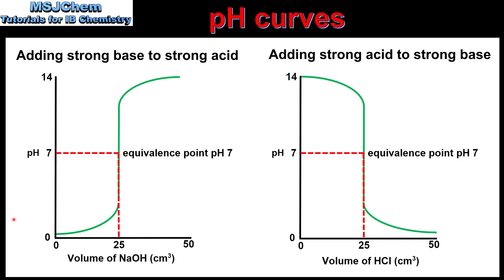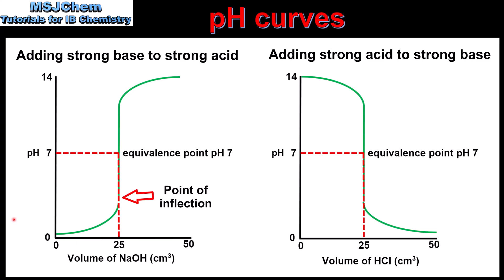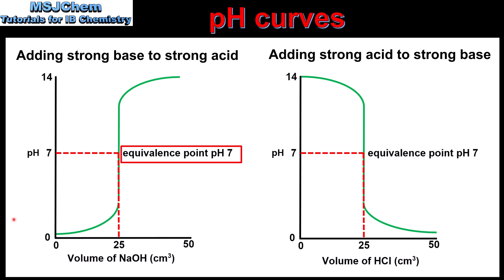On the left we have the pH curve for adding a strong base to a strong acid. We start at a low pH of about pH 1, which is the pH of a strong acid. As the base is added the pH increases until we reach the point of inflection, which is the really steep increase in pH. The curve then reaches a maximum pH of approximately 14. The equivalence point occurs at pH 7, which is the point at which stoichiometrically equivalent amounts of the acid and base have reacted and the solution contains only salt and water.